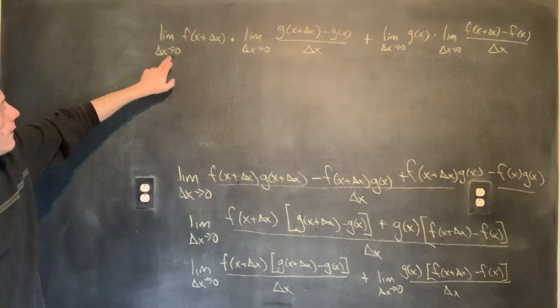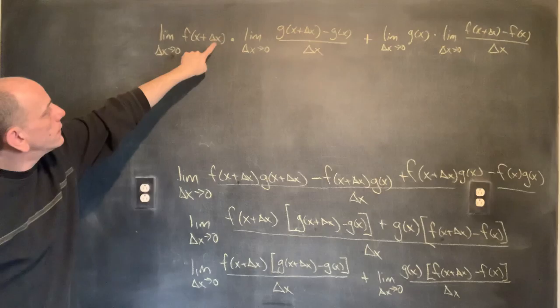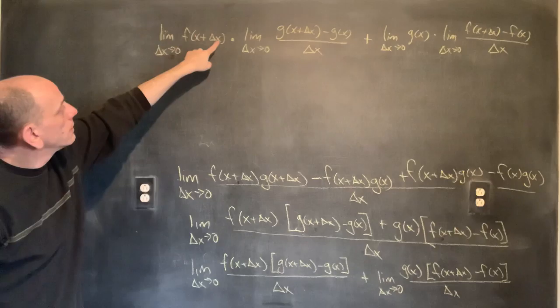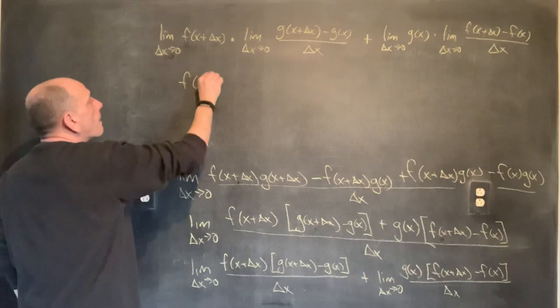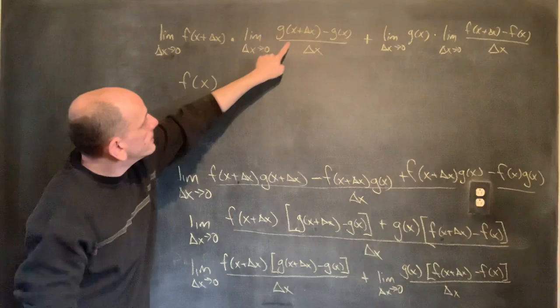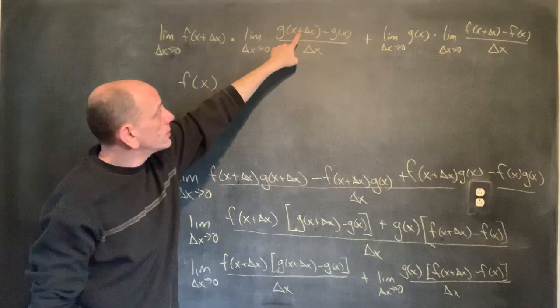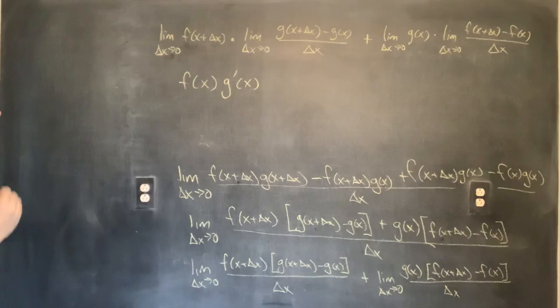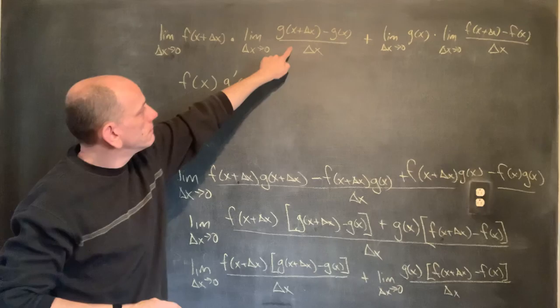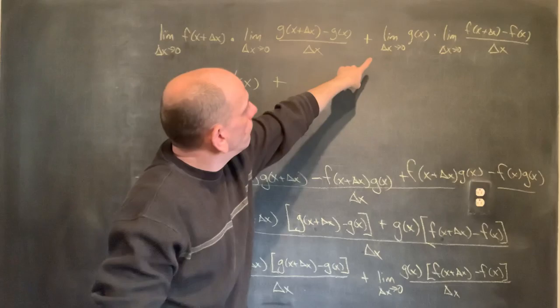We're very close now. If I let delta x go to zero — so it's arbitrarily small — then that delta x vanishes and I'm just evaluating f at x. The limit as delta x goes to zero of just f(x + Δx) is just f(x). And this piece — g(x + Δx) minus g(x) over delta x — that's the derivative of g. So we have f(x) times the derivative of g, plus...